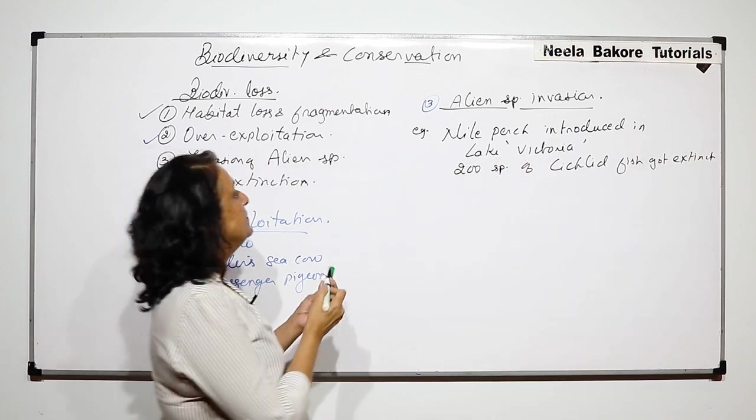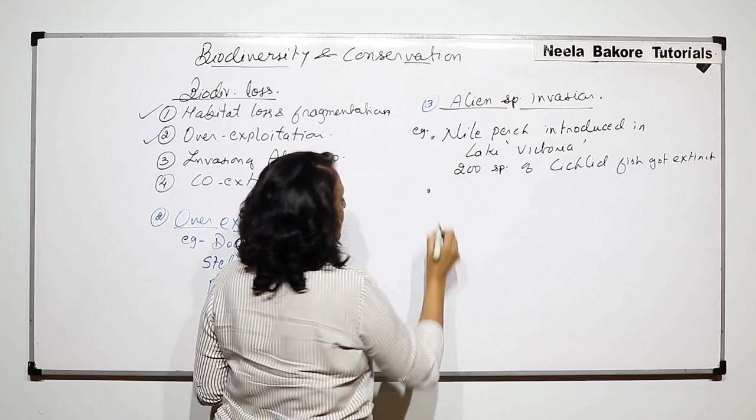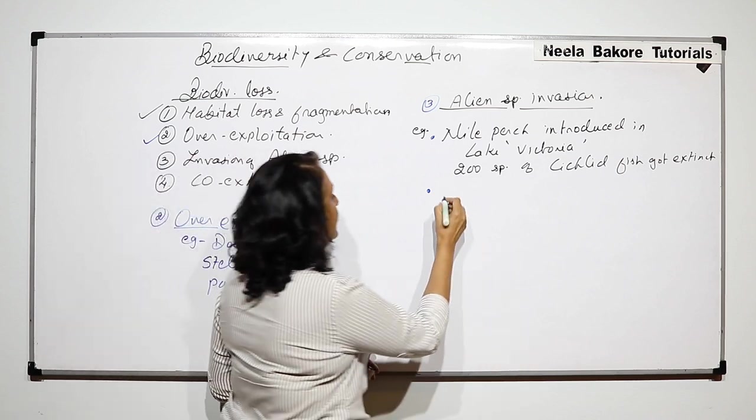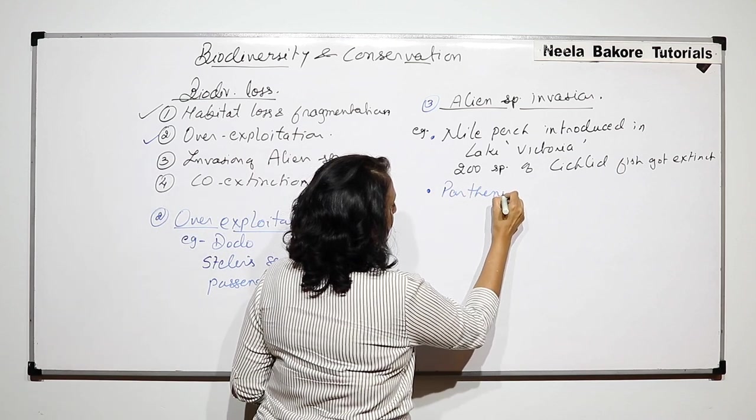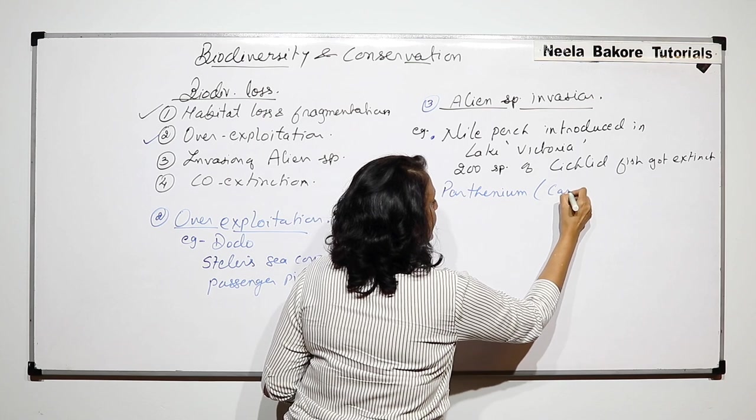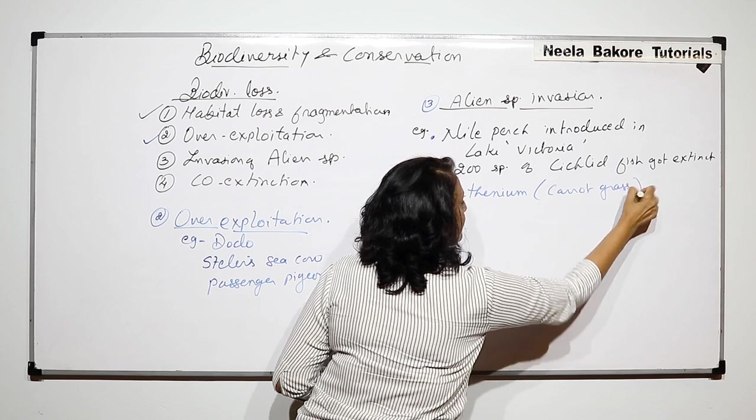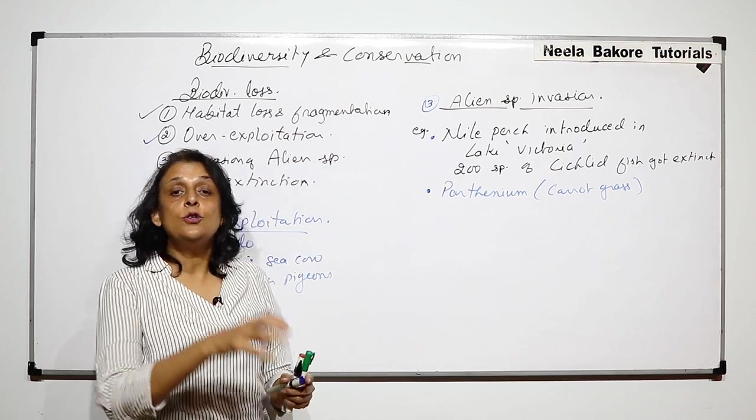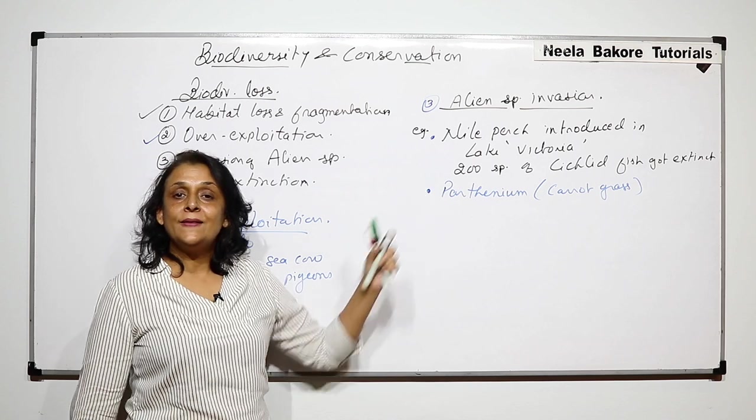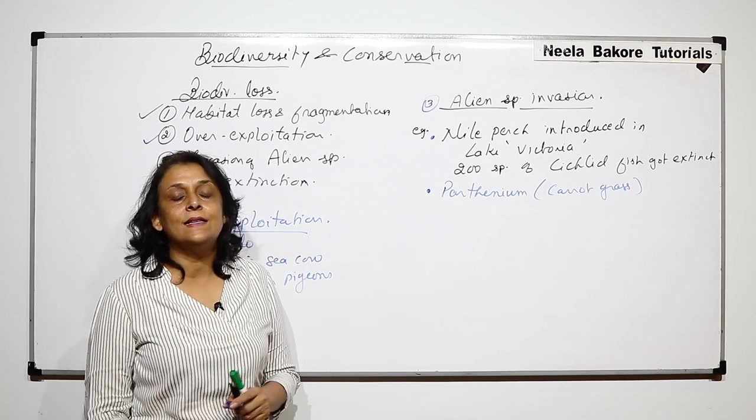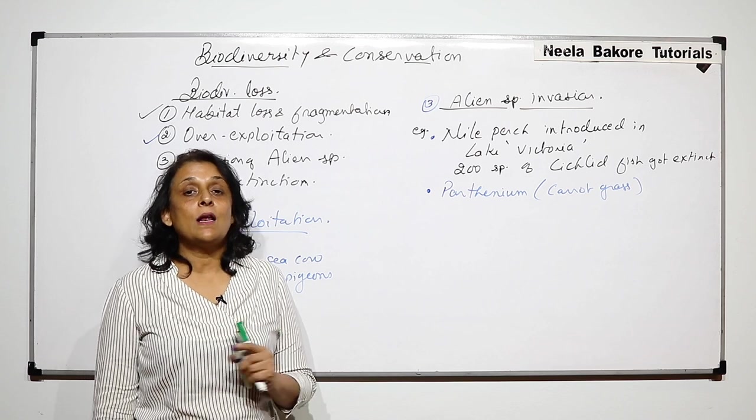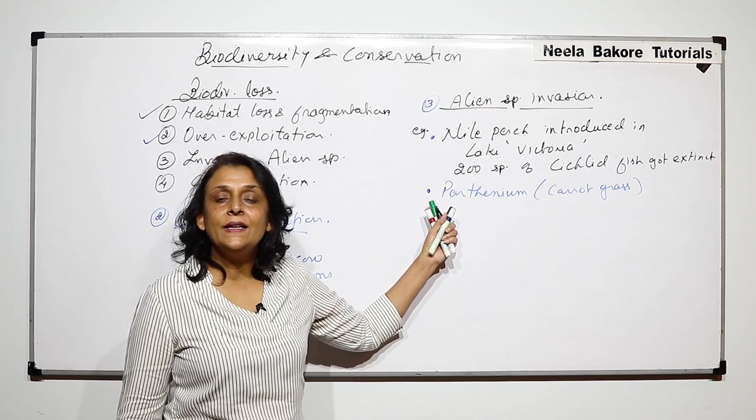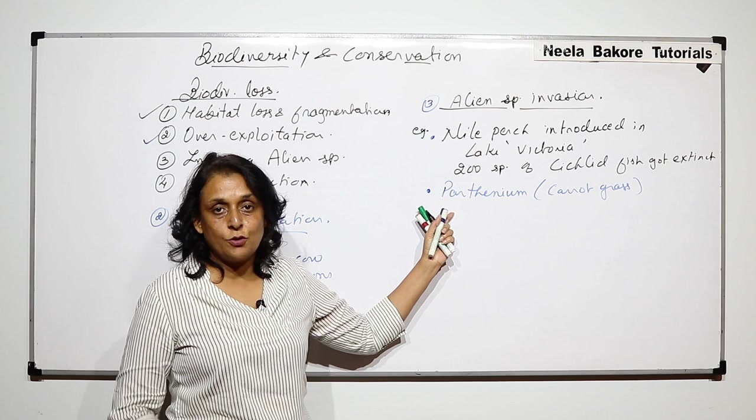One more example is Parthenium, commonly known as carrot grass. This Nile perch was introduced into Lake Victoria. Parthenium was not introduced; it entered accidentally along with cargo ships which were bringing some grains. Along with the grains, Parthenium seeds also entered India.